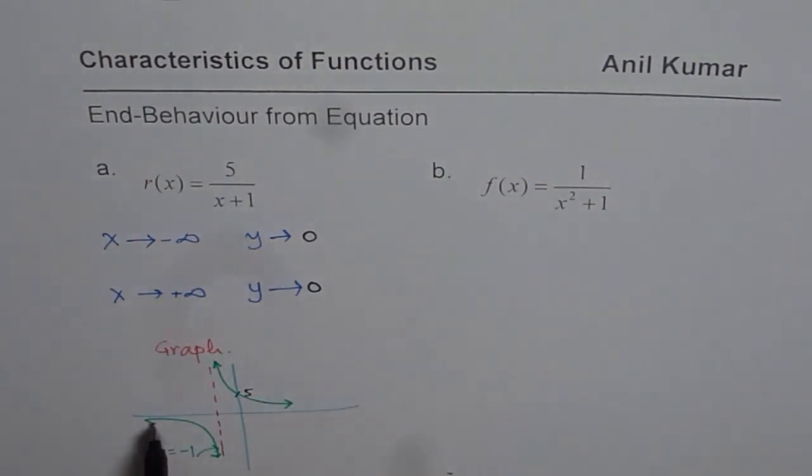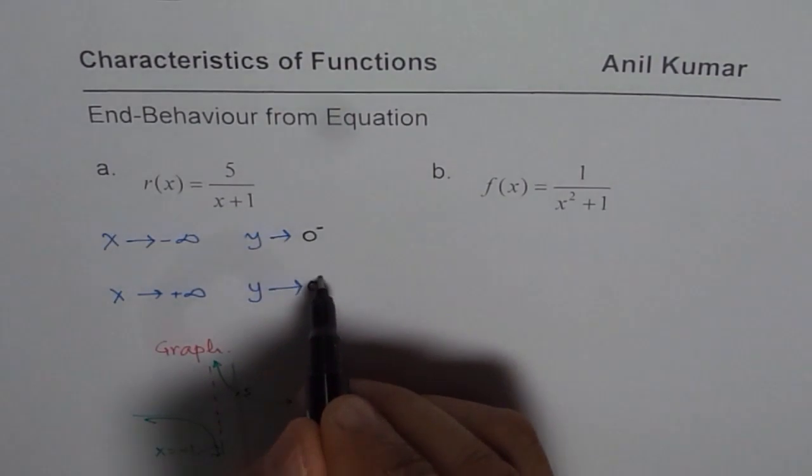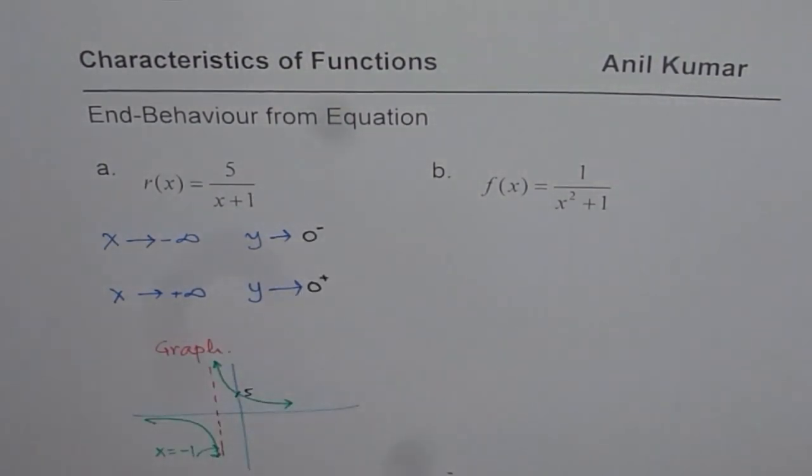You will also notice that in the first case, y approaches 0 from the negative side. So at times we write negative here. And in the second case, it approaches 0 from the positive side. So we write positive here. So that is not a must, but it is always a good practice to write like this. So sketching a graph shows you the result and then easily you can write down the answer.